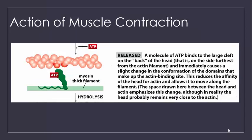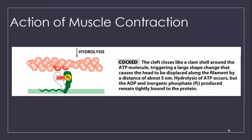When ATP is introduced, it will bind to an active site on the myosin head. This causes a conformational change that releases the actin from the myosin head. After releasing the actin filament, the myosin head moves so that its head is located about 5 nm away and hydrolyzes the ATP to ADP and inorganic phosphate. Note that the ATP is not released at this point.